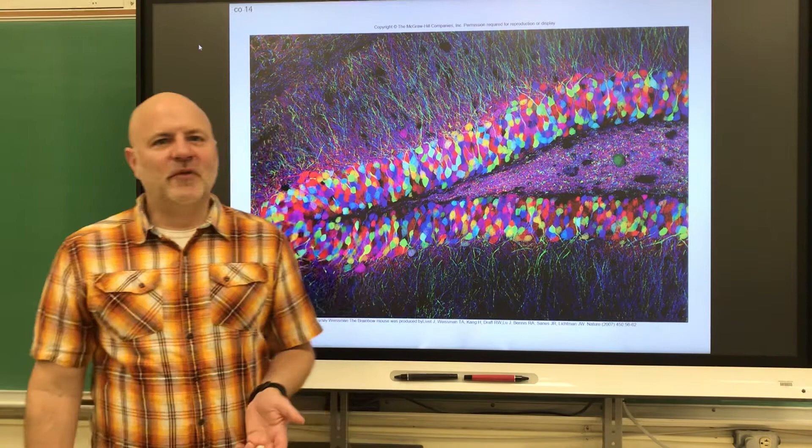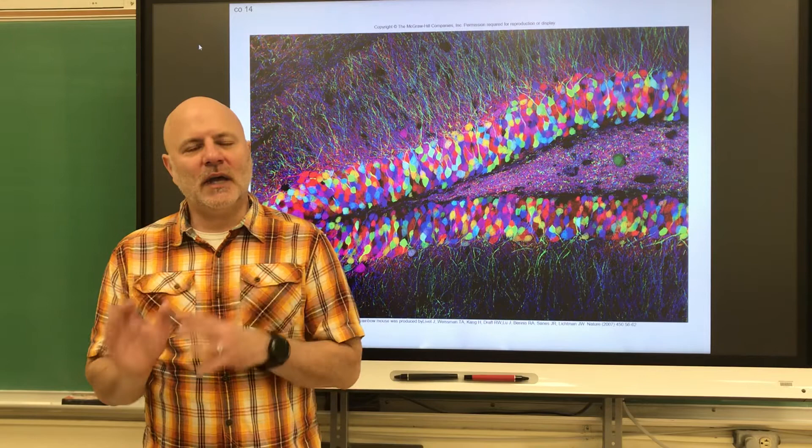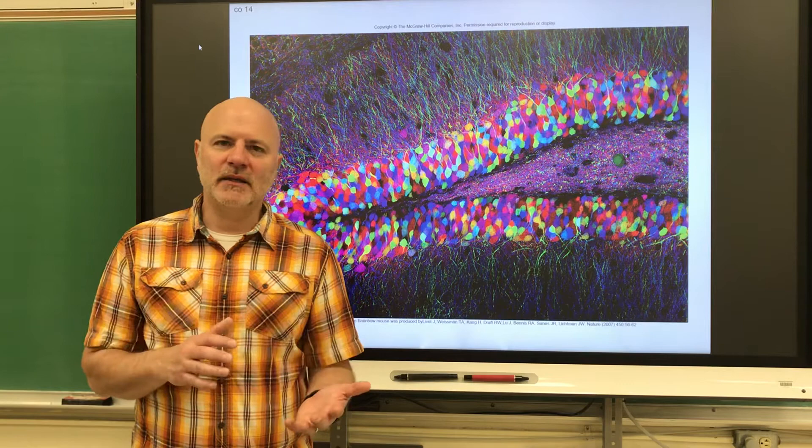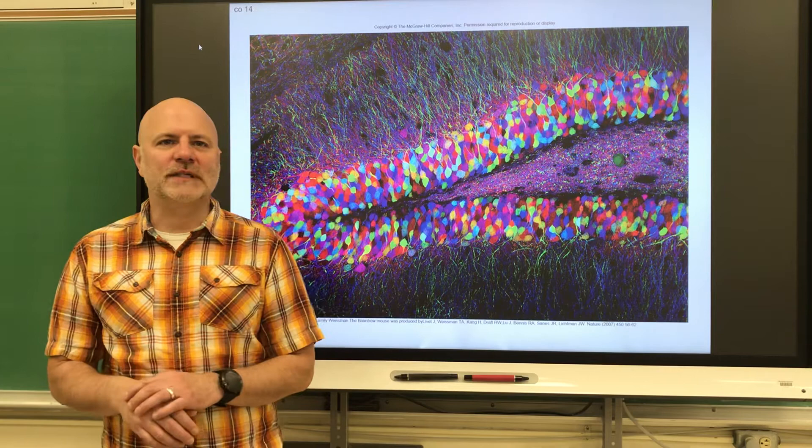Let's start Chapter 14. Chapter 14 deals with integration of our nervous system. A lot of what I've done in the past two chapters — 12 and 13 — is when I talked about a body area, the spinal cord or the brain, I went ahead and did the integration at that point. So we're going to do a very small amount of what's remaining here in Chapter 14.